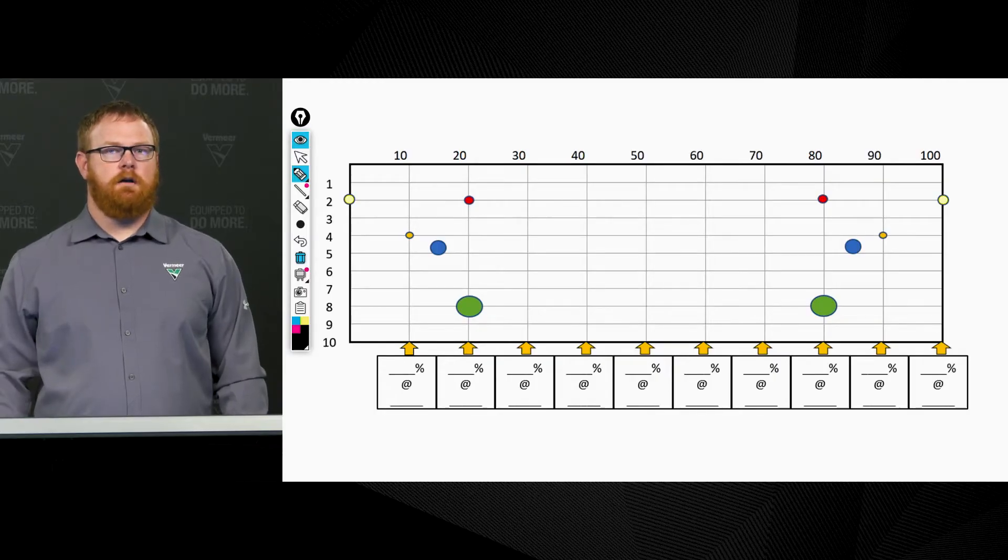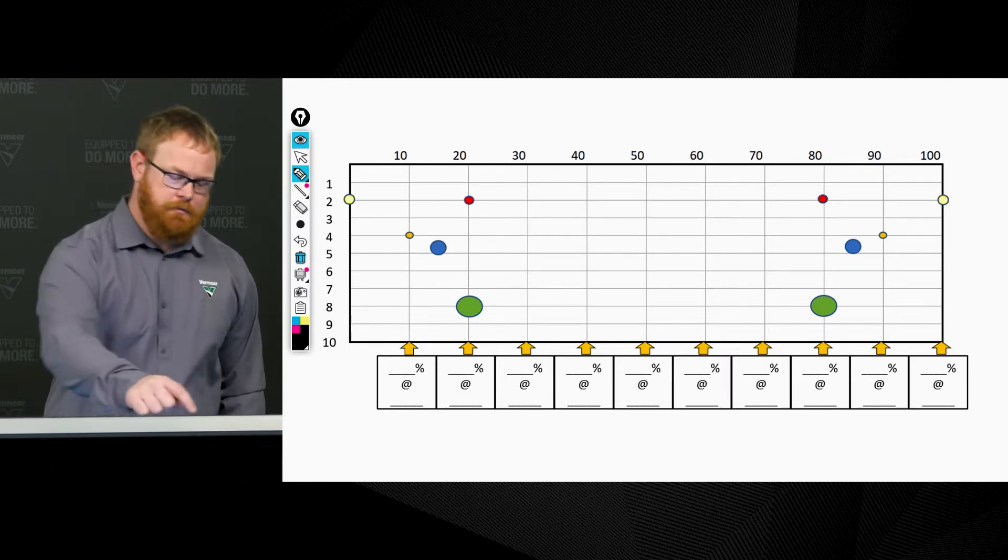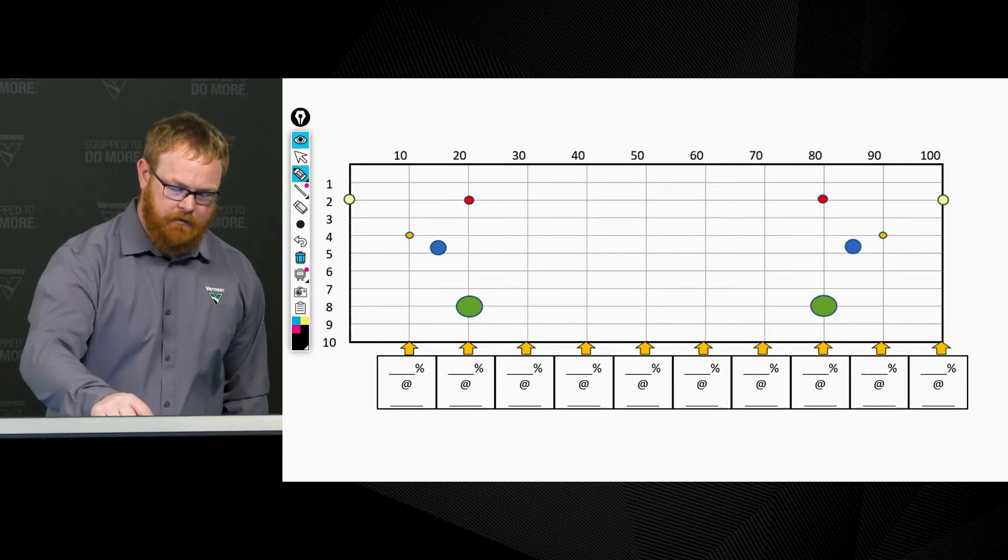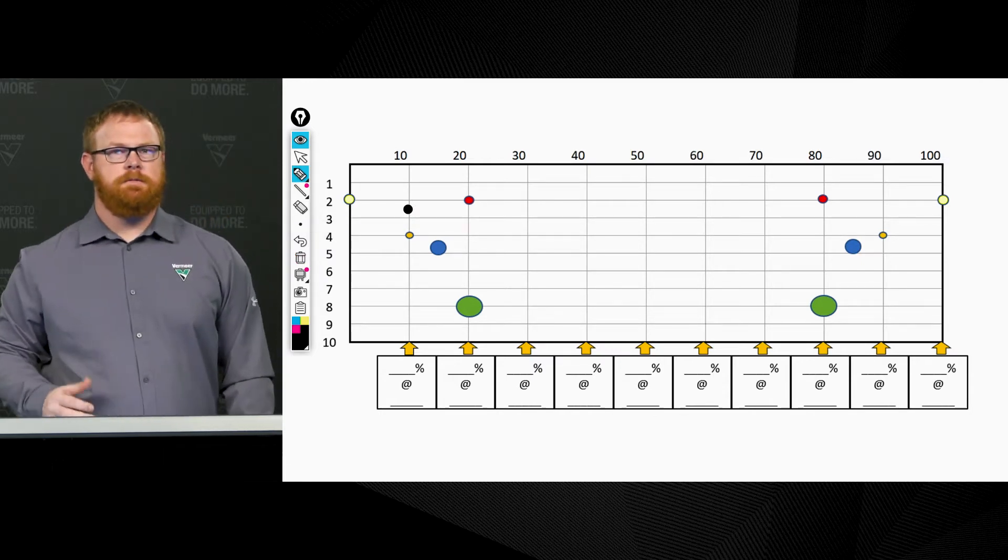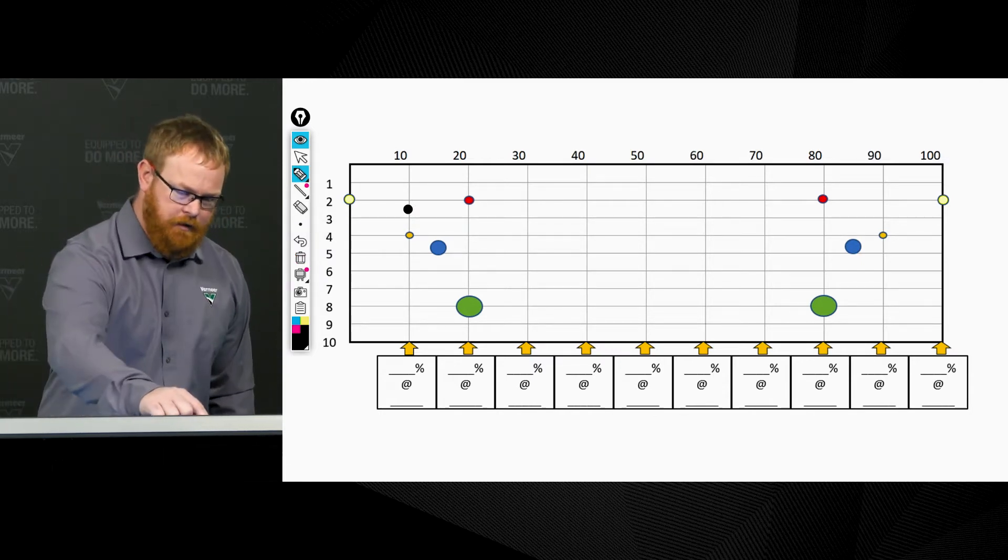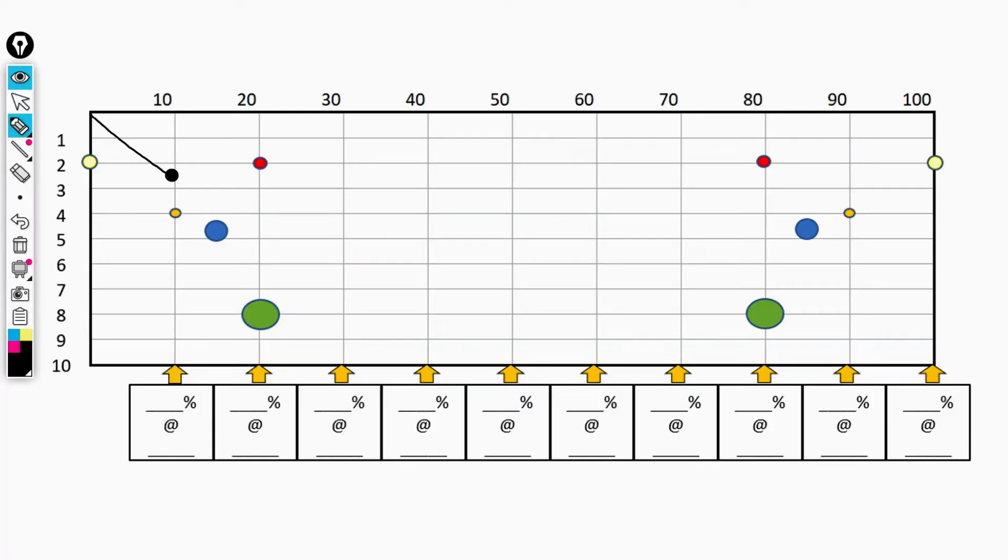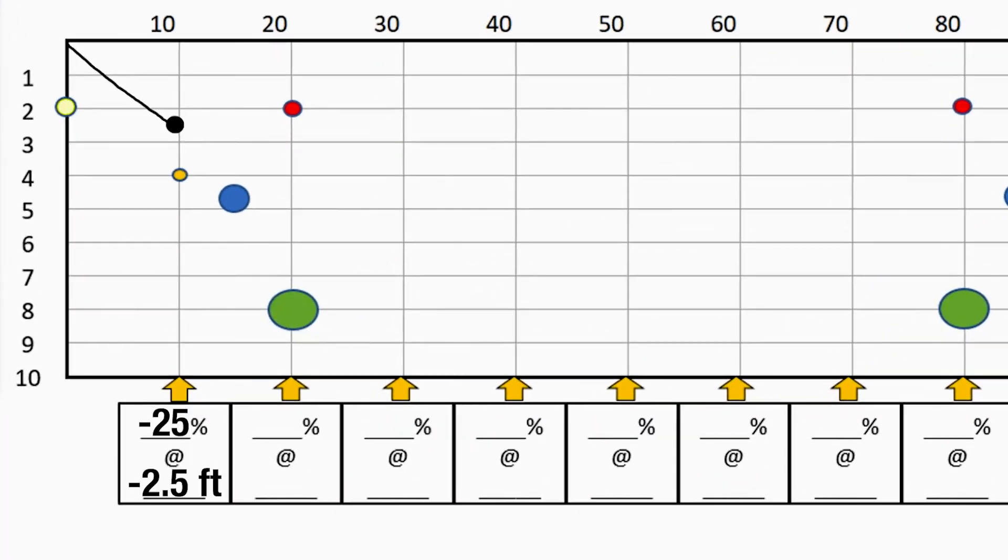I'm going to draw my first rod on the graph starting at the corner of the graph paper and go down approximately two and a half feet and over 10 feet and make a dot. This represents the approximate depth of the drill head at the completion of the first rod. I like to write my predicted depth and pitch below to help me know where I'm at and how much I can change on the next rod.